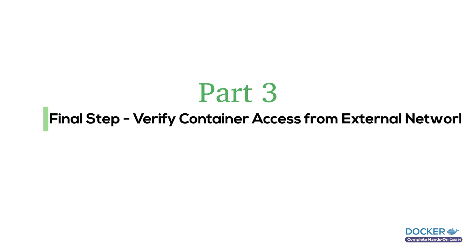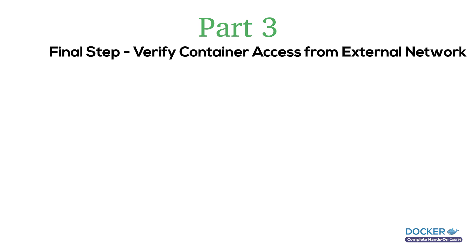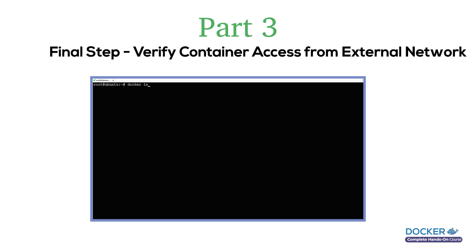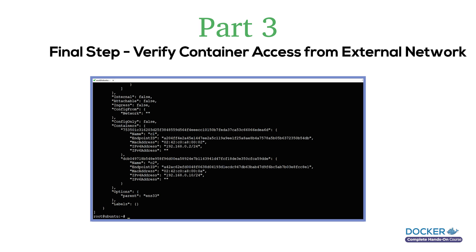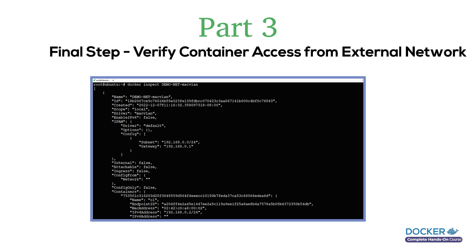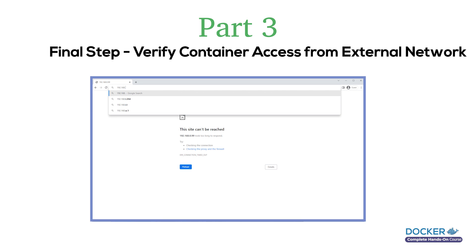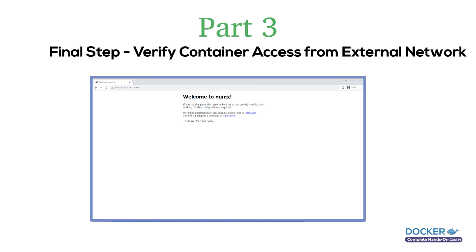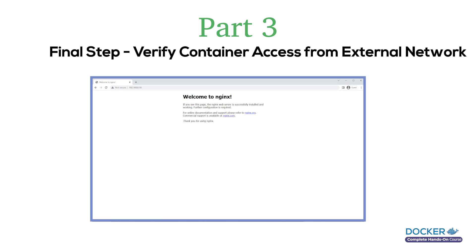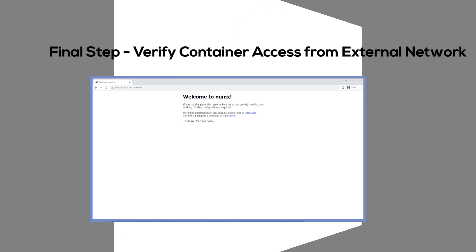In the final part, let's try to establish if the containers are accessible from the external network. Let's find the IP address of the containers first — you can view this with docker inspect using the network name. Here you can see the two containers c1 and c2 attached to the MacVLAN network. Let's grab the IP addresses and access them from your desktop. Here you can see the nginx page is loaded while accessing with both IPs. This is how you configure the MacVLAN network in bridge mode.